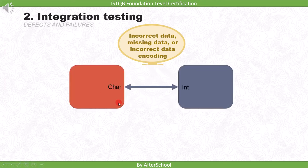For example, suppose there are two modules where one module is sending data in character form, whereas the other is expecting data in integer form. Then while performing testing, we can find incorrect data-related defects.